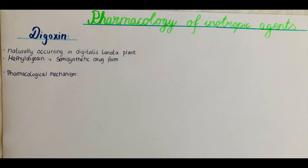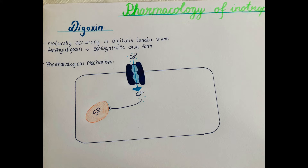We will now go into detail about the pharmacological mechanism. We will first start with an action potential that will reach our cardiomyocyte. When this action potential reaches the cardiomyocyte it will cause calcium channels to open. The opening of calcium channels allows calcium to go into the cell by traveling down its concentration gradient, because calcium is naturally more abundant outside the cell.